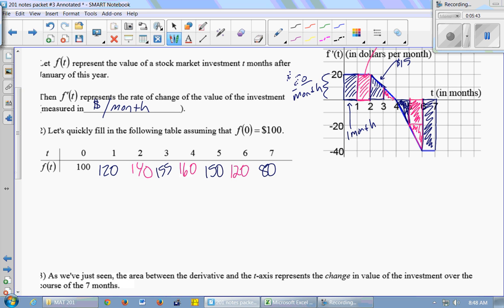So as we've just seen, the area between the derivative and the t-axis represents the change in value of the investment. Just like when the derivative was representing velocity, the area under the curve represented the change in distance. That works with any rate of change. It represents the change in value of the investment over the course of the seven months.